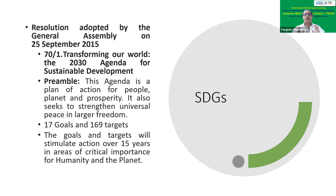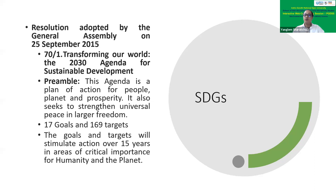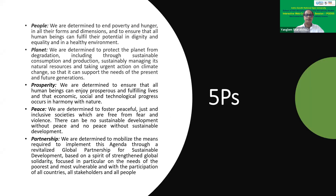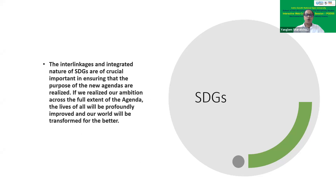The SDG preamble seeks to strengthen universal peace and larger freedom — without peace, it will be very difficult to achieve sustainable development. In nations and regions where there is political or social turmoil, achieving sustainable development goals will not be possible, as we have seen in parts of Africa and other countries. The SDGs have 17 goals and 169 targets, and all these goals are interrelated to each other.